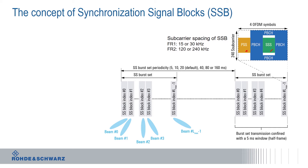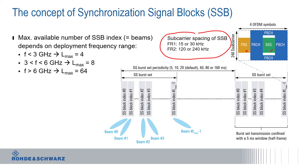Since 5G NR supports different frequency ranges — FR1 and FR2, the so-called sub-6 GHz and millimeter wave frequency ranges — synchronization signal blocks can utilize different sub-carrier spacings. That determines how many SSB indices, in other words beams, are available. This is dependent on the deployment frequency range: below 3 GHz it's up to 4, between 3 and 6 GHz we have 8, and beyond 6 GHz in the millimeter wave range we could have up to 64 SSBs being transmitted.